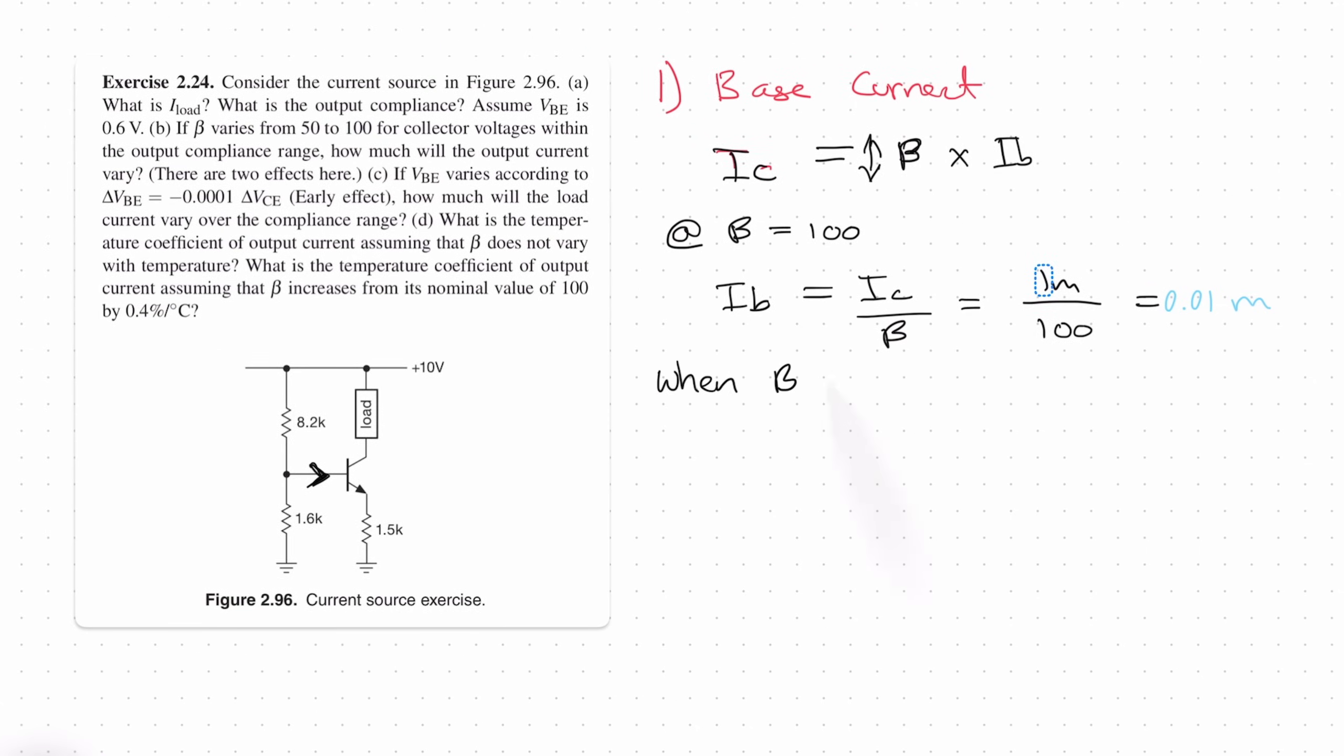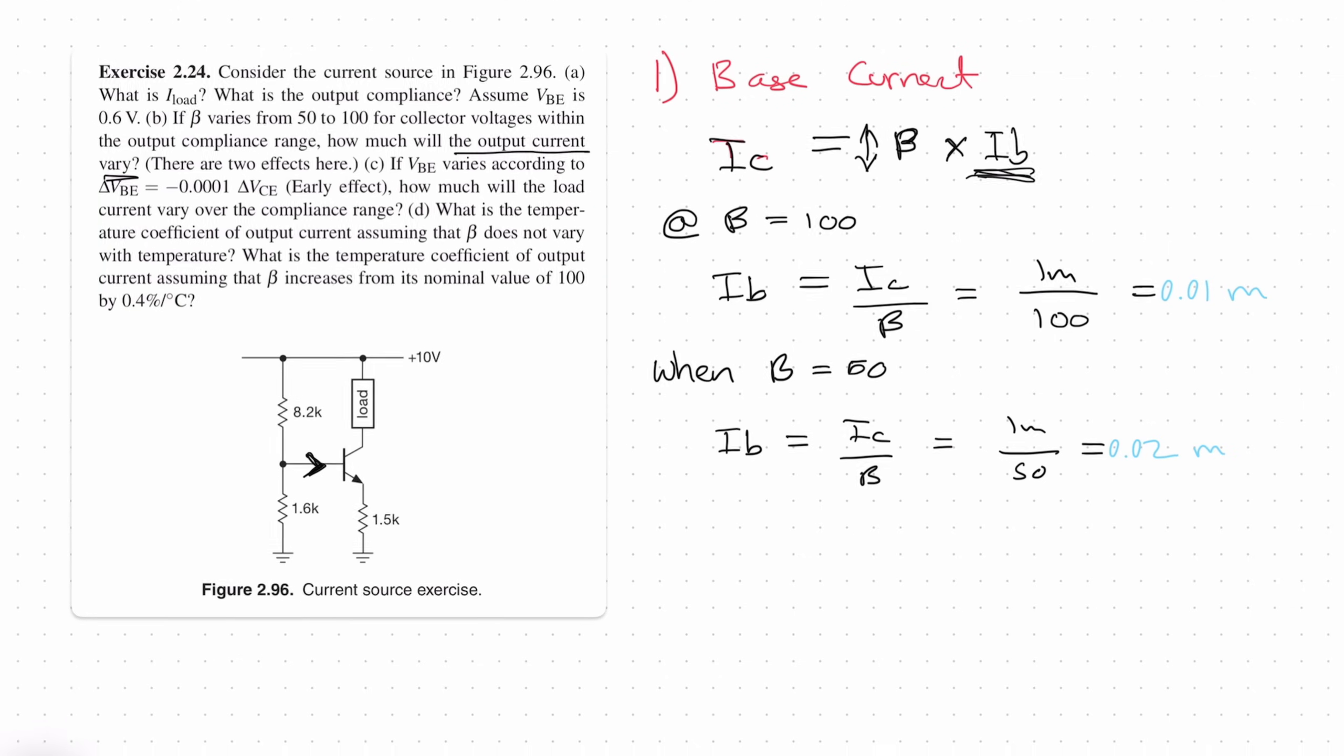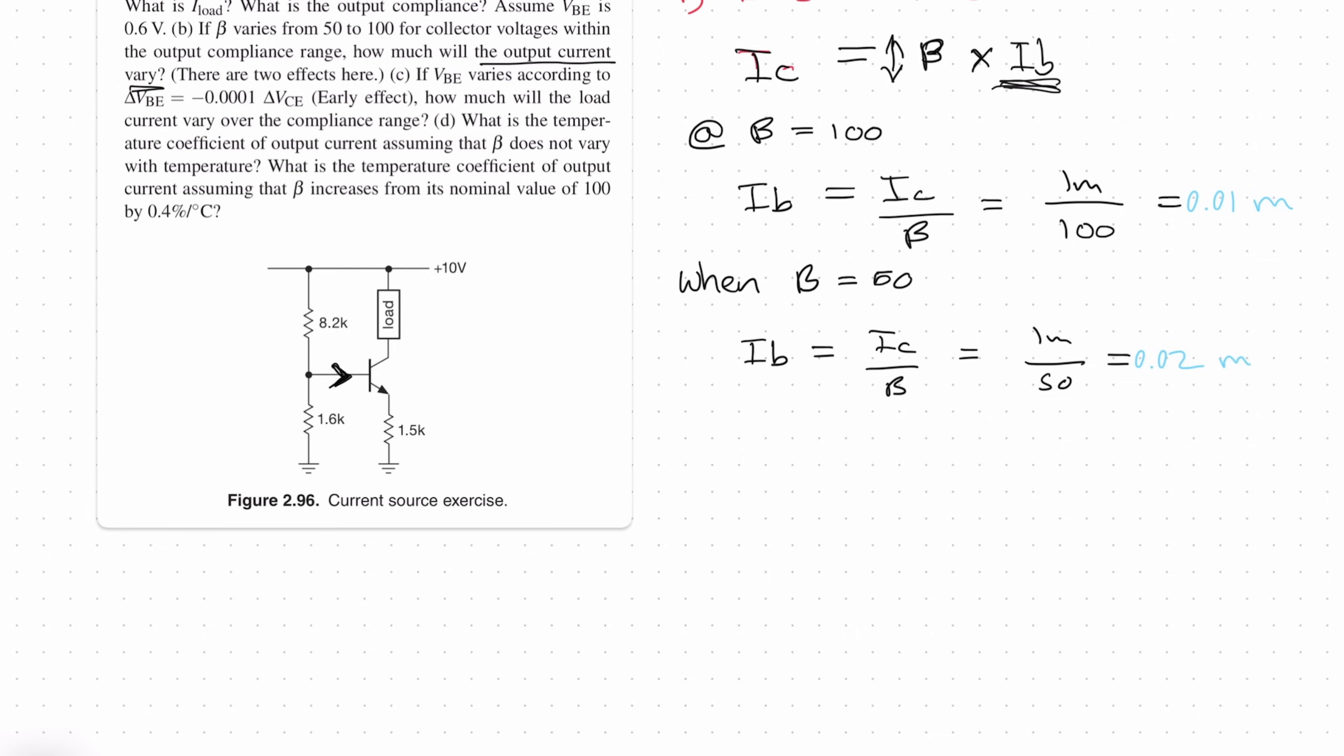Now looking at case two, when beta is equal to 50, IB is equal to IC over beta, same as before, is equal to 1 milliamp over 50, which gives us 0.02 milli. So you can see it's gone up to 20 microamps. So what this is telling us is that as beta varies, IB will change to compensate. So if beta goes down, we need more base current. Obviously, for the question, we need to calculate how much the output current will vary. So let's continue looking at this to calculate that.